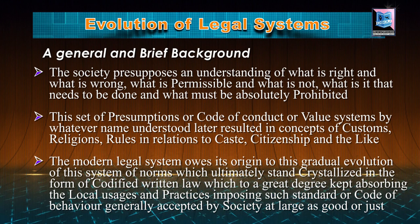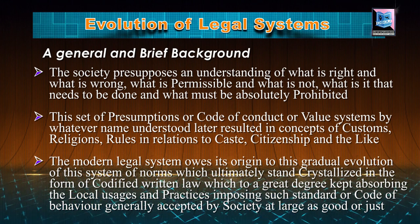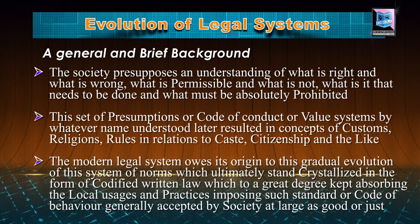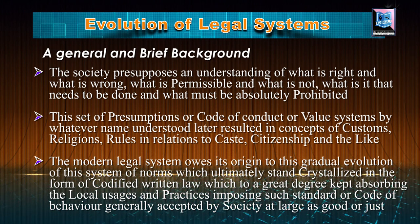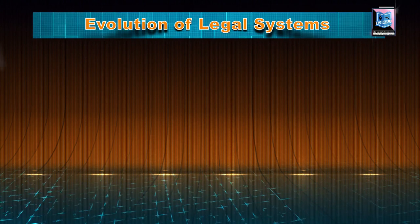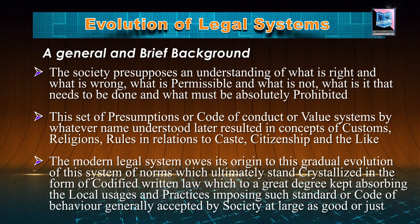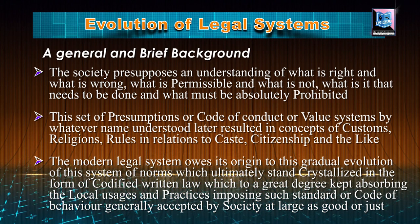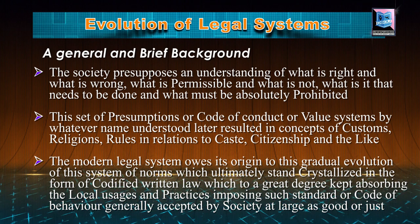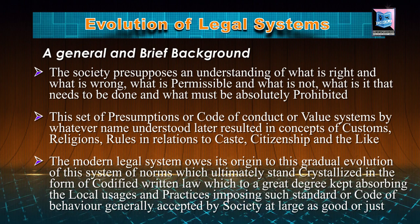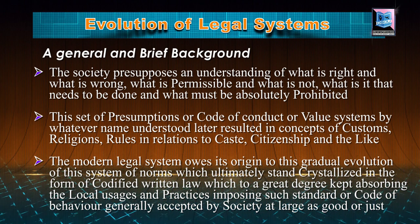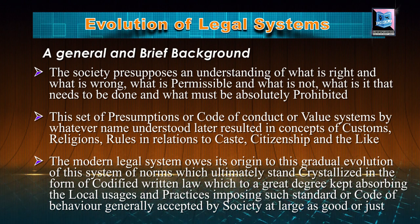This set of presumptions or code of conduct or value system, by whatever name understood, later resulted in concepts like customs, relations, rules in relation to caste, citizenship and the like. This modern legal system which we know today owes its origin to this gradual evolution of this system of norms, which ultimately stand crystallized in the form of codified written law. This is also why we see variations in systems of norms across countries, and perhaps this is why it is said that law is a reflection of society.